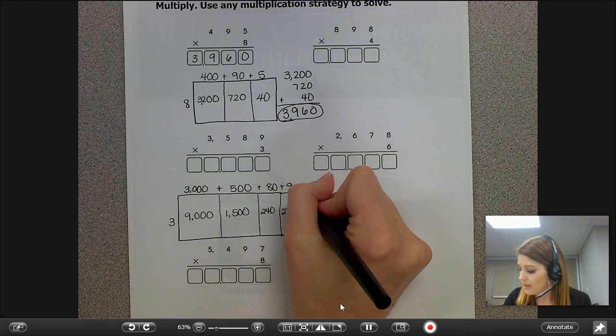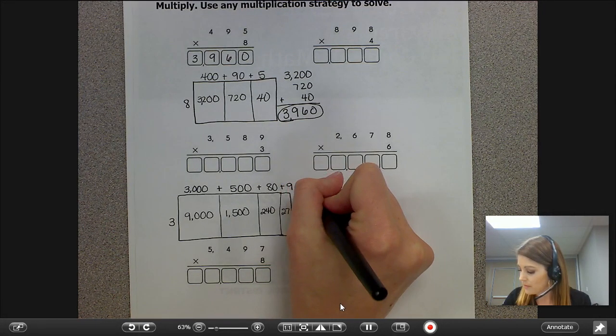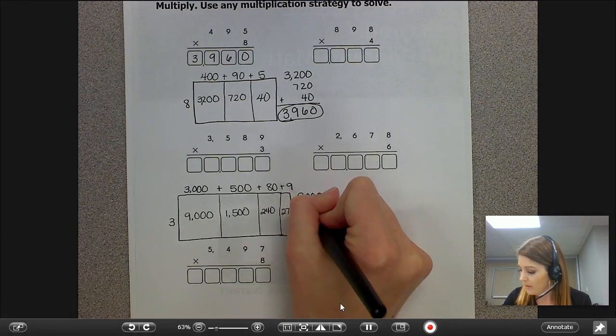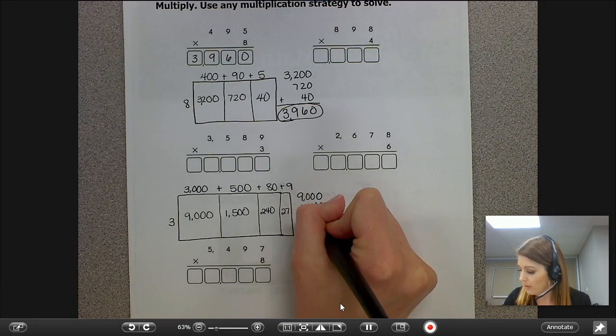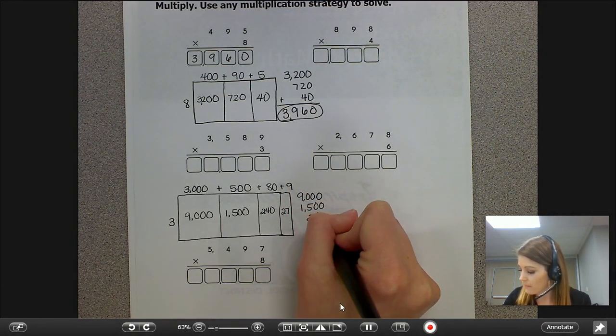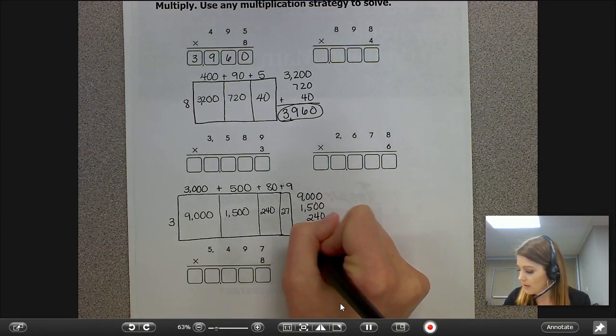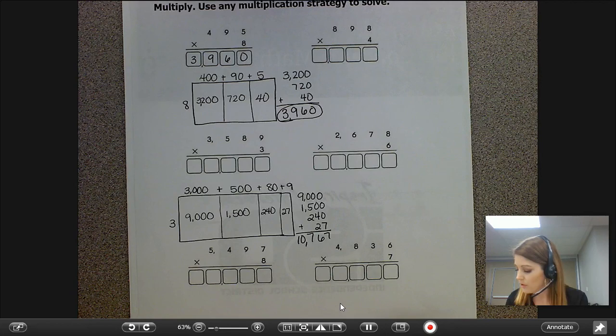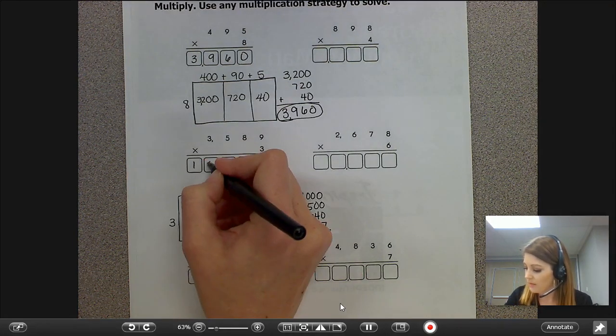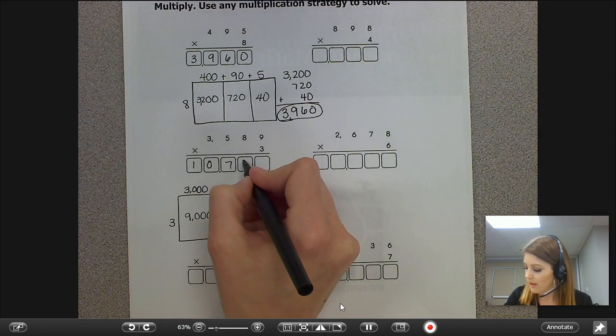And then I'm going to take each one of those products and add them together to get my final product. So my final product for this multiplication equation is 10,767.